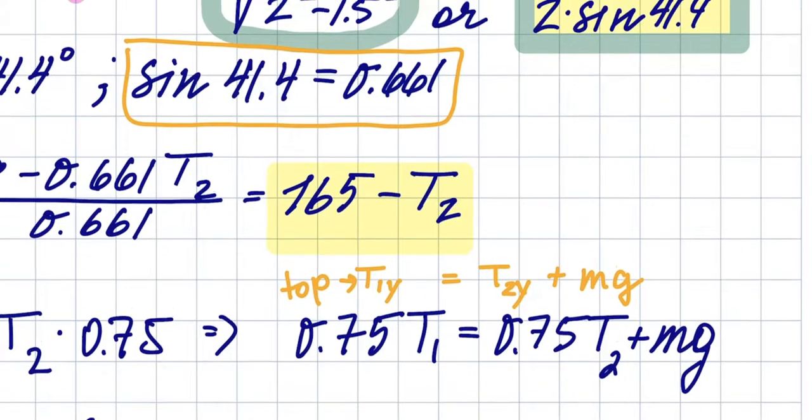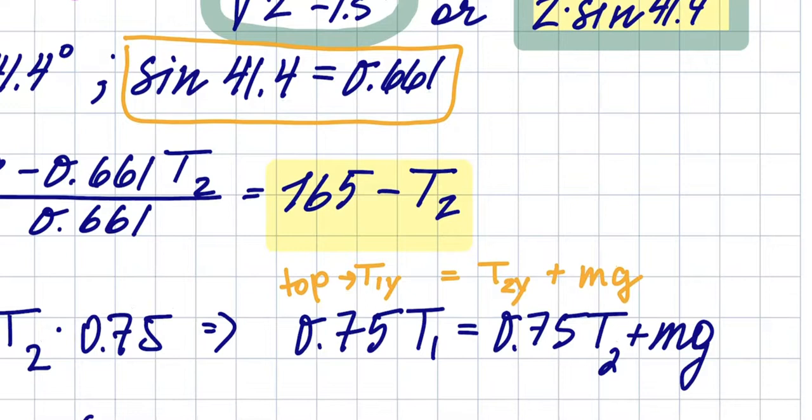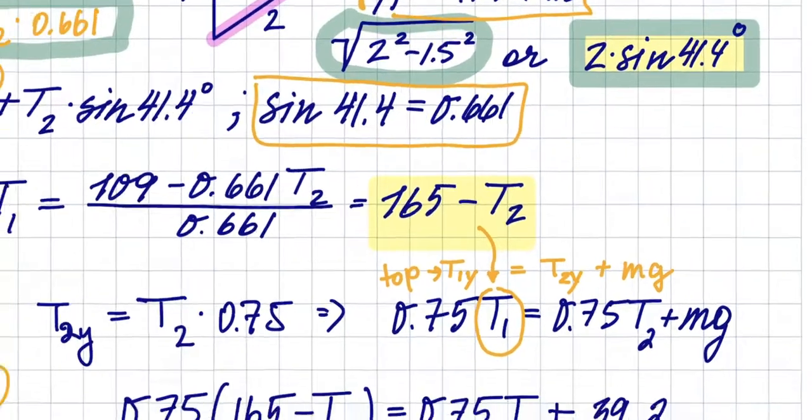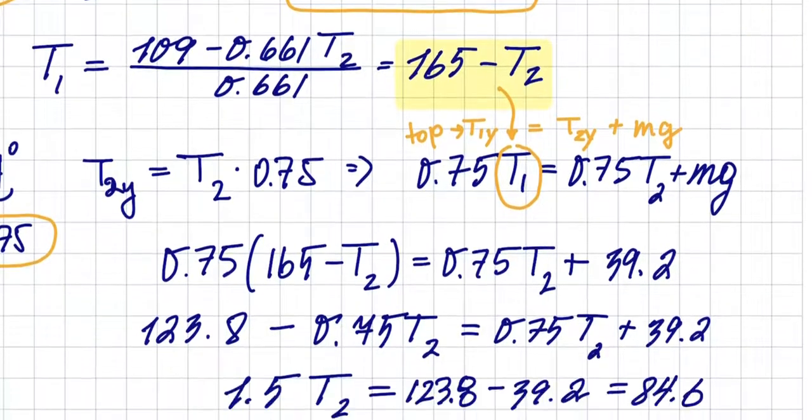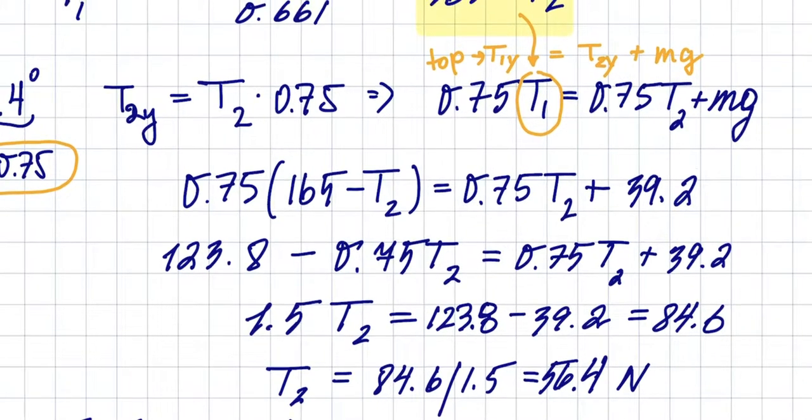So now instead of T1, I'm going to substitute this. The rest is tedious algebra—yikes. So 0.75, instead of T1, I'm writing 165 minus T2 equals—so all of this right here, that is this with a substitution.